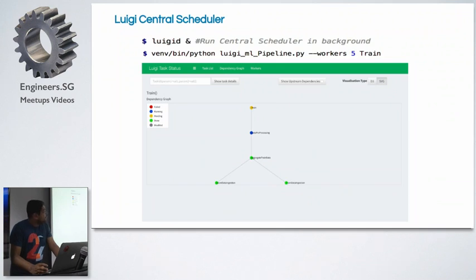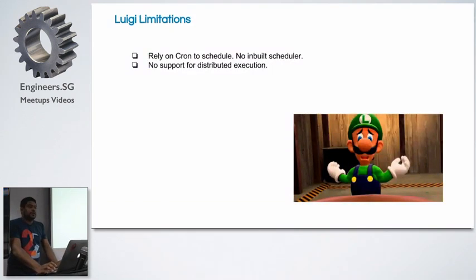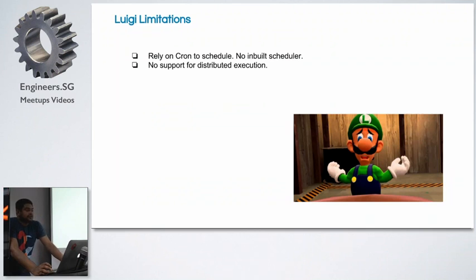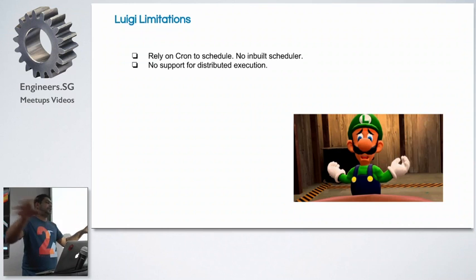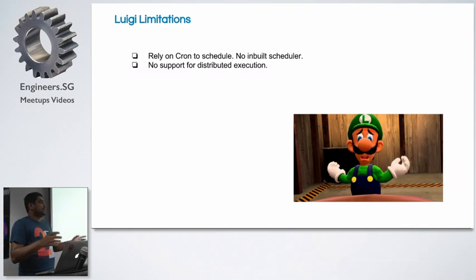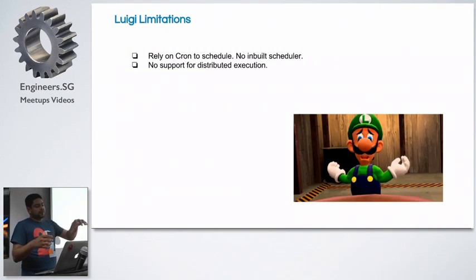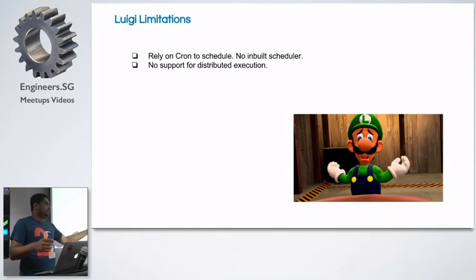The visualizer is available on port 8082 and is only available when running Luigi as a central scheduler — a single Luigi process with a single process ID. All tasks from all machine learning pipelines you run appear in that single page. Current limitations: there's no built-in scheduler yet, and distributed execution across a cluster is not supported yet, though that's something planned for the future.